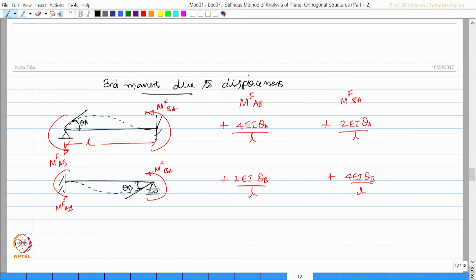If I have a simply supported beam where I want to give unit rotation at the end or some rotation θ_A, then I should say this is going to be M_AB and this is going to be M_BA. M_AB will be plus 3EI·θ_A/L, and this will be 0.